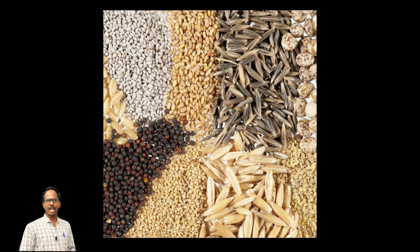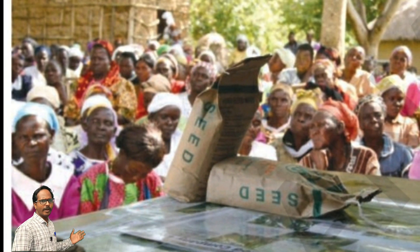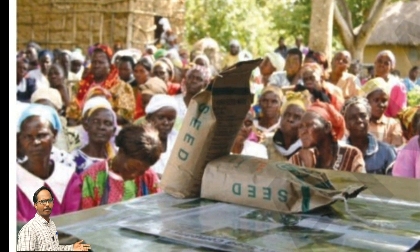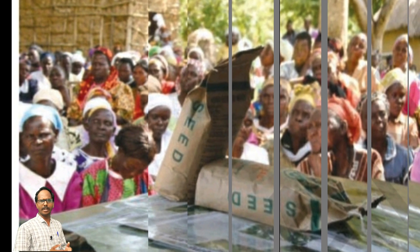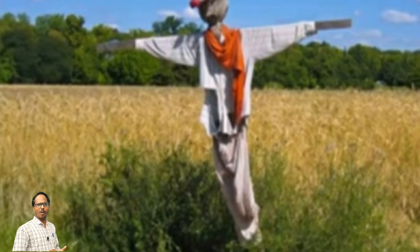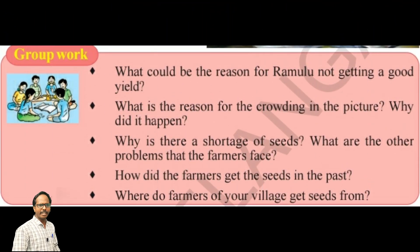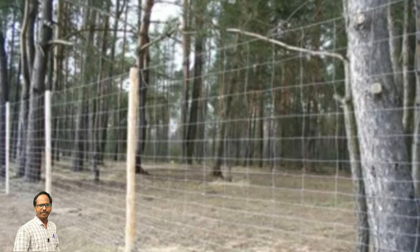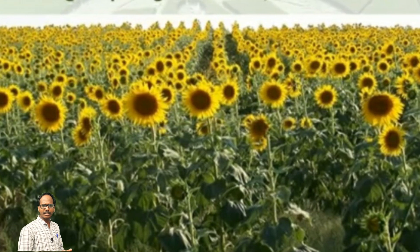Now we have to discuss about the role of seeds in agriculture. Ramlu went to the market to buy cotton seeds. He saw people standing in a queue in front of the shop to buy seeds. He joined one of the queues and purchased the seeds. He sowed them in his field. The crop was good but the yield was not. Children, think and discuss — what could be the reason for Ramlu not getting a good yield? Some seed companies are deceiving farmers by selling substandard seeds which do not germinate, or sometimes do not give a proper yield.